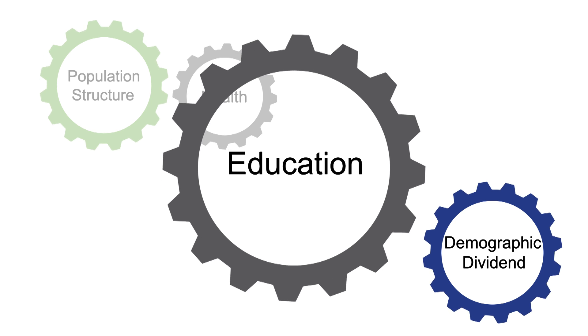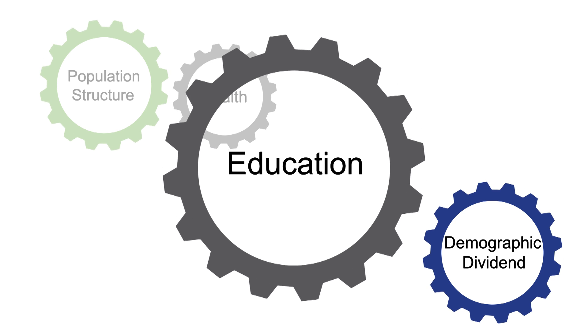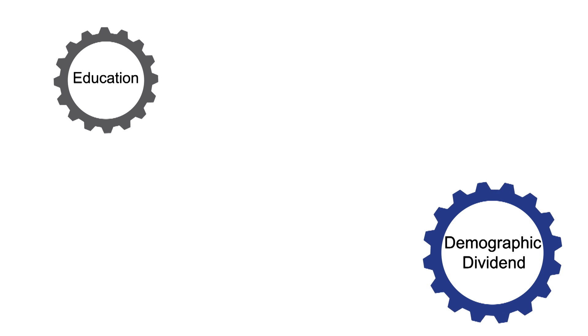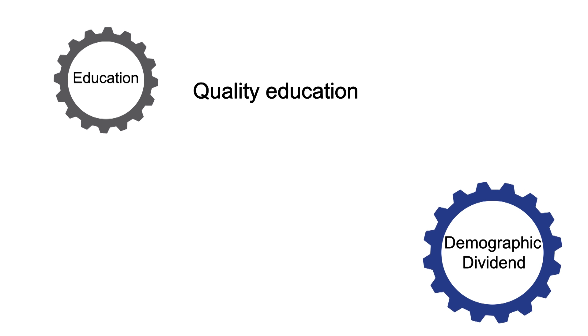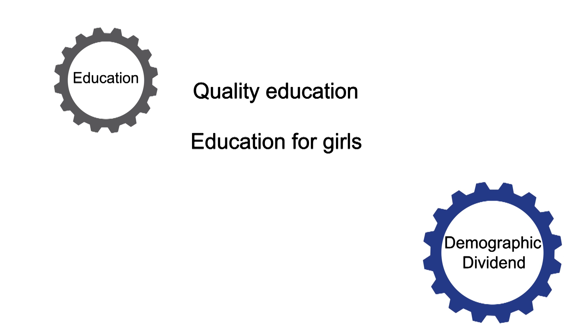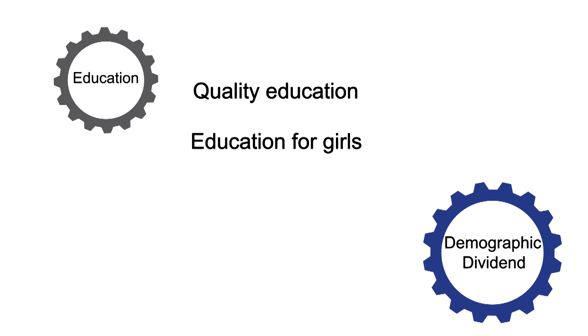A second area is education. Because of the Millennium Development Goals, countries are increasingly paying attention to universal access to primary education, and this is great. But they also need to focus on the quality of education to make sure that as children move through the education system, they're learning what they need. Countries also need to focus on education for girls, taking advantage of every opportunity to improve the human capital of their population.